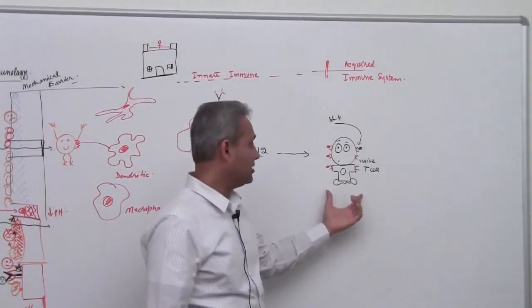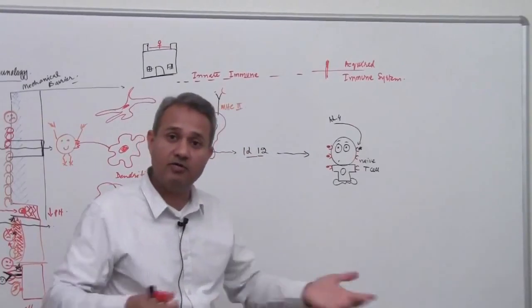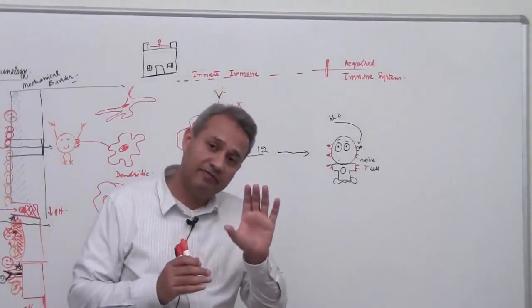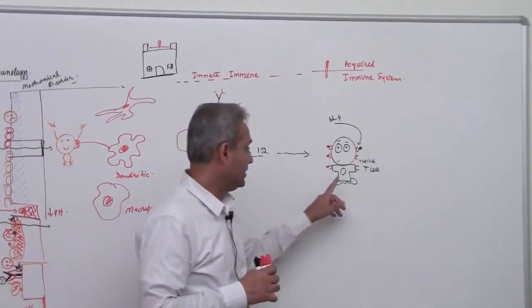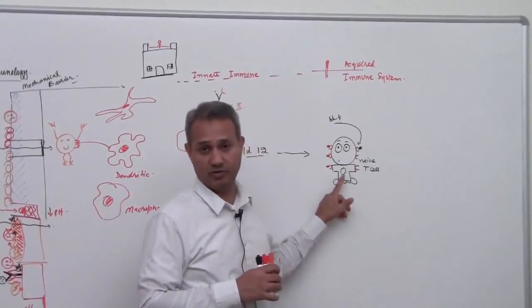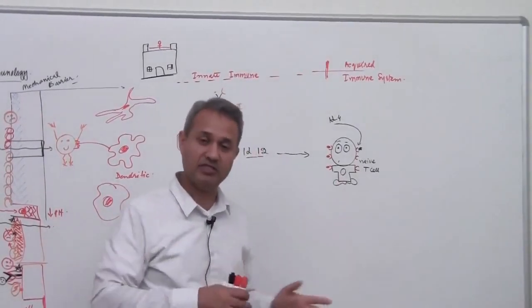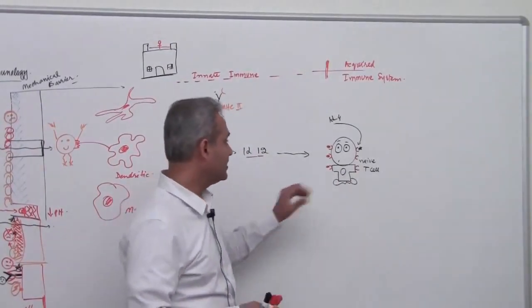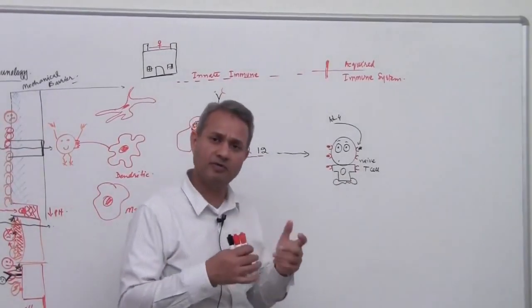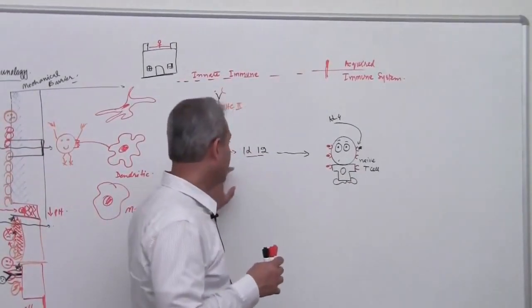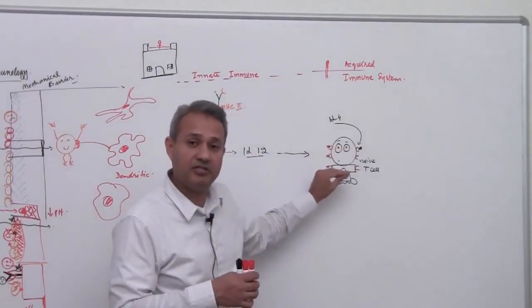So over there, there is a guy who is sitting around in the lymph node. He is a naive T cell, he is called T helper 0. He is a helper as well, we will see why he is a helper. He is sitting there and he is saying, well what is my function? And so when IL-12 comes and attaches...